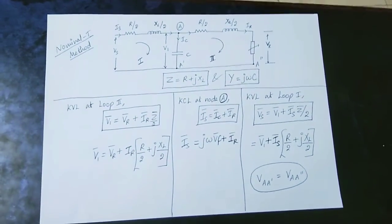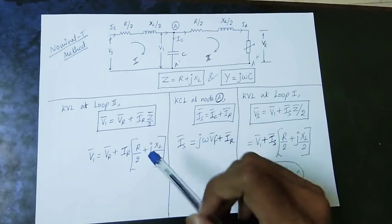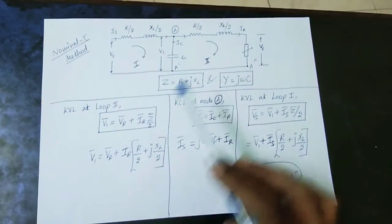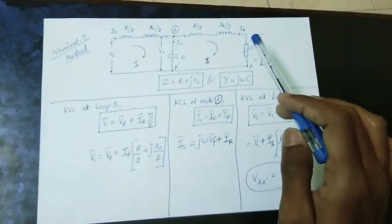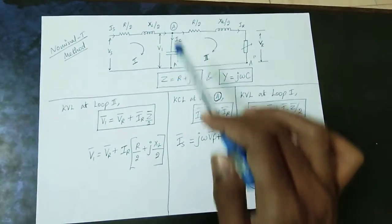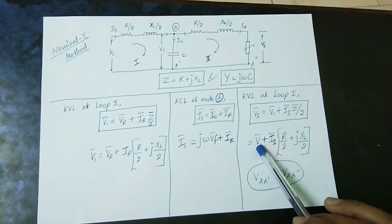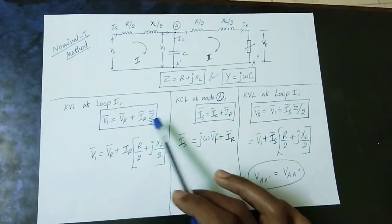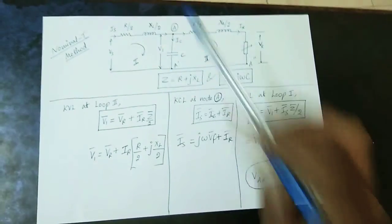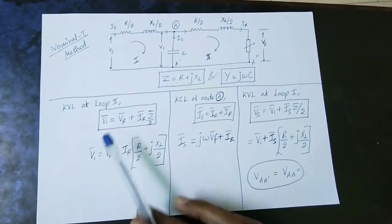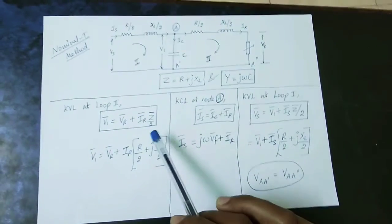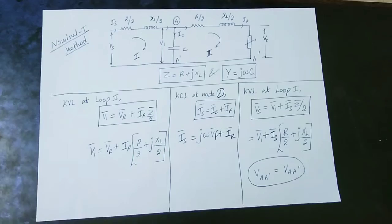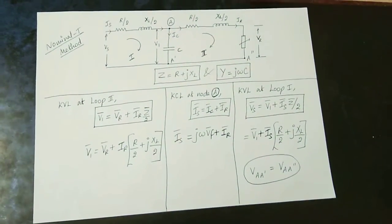Next, we apply KVL at loop 2. The receiving end voltage VR plus the voltage across the impedance Z/2 equals the capacitor voltage V1. So V1 = VR + IR × (R/2 + jXL/2). We substitute this expression for V1 back into the loop 1 equation to obtain the final sending end voltage formula. This completes the nominal T circuit analysis using KVL and KCL.